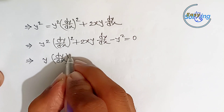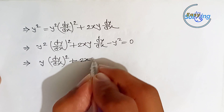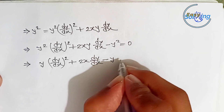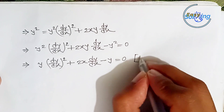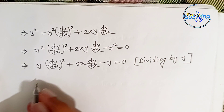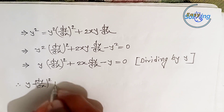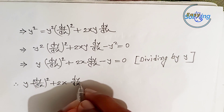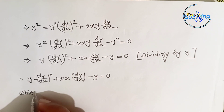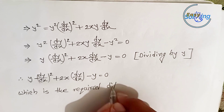Rearranging: y² · (dy/dx)² + 2xy · (dy/dx) - y² = 0. Dividing by y, we get: y · (dy/dx)² + 2x · (dy/dx) - y = 0. This is the required differential equation.